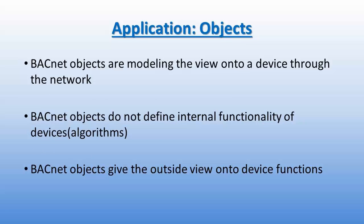In BACnet, objects model the view onto a device through the network. Objects do not define the internal function of the devices — the algorithms in this case — but rather give an outside view onto device functions. For example, the BACnet loop object is defined in such a way that different loop algorithms — PI, PID, sequence, and predictive control — can all be mapped.